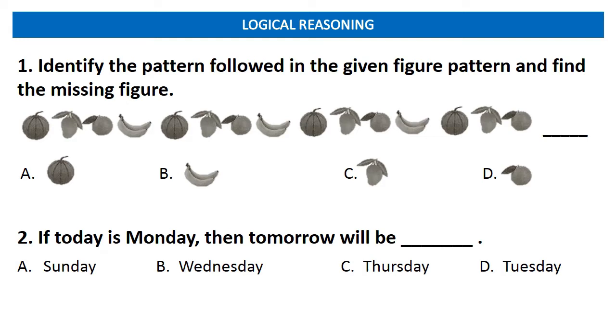Let's start with logical reasoning. First question is identify the pattern followed in the given figure pattern and find the missing figure. Answer is option B. Here the pattern repeats itself after every 4 figures, so the next figure is banana, that is option B.